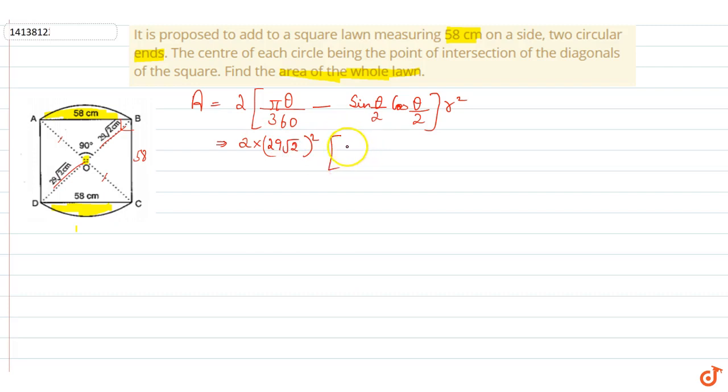Now, we have to put here pi theta by 360. Pi value 22/7 into theta 90 by 360 minus theta 90 sin theta by 2 sin 45 degree into cos 45 degree.